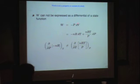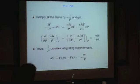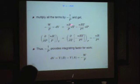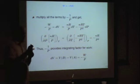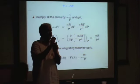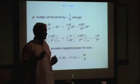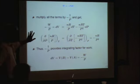When W is divided by minus P, you get a perfect differential which we call dV. You multiply all the terms by the integrating factor minus 1 over P, and you will find that the derivatives are the same. That means minus 1 over P provides the integrating factor for work, and dV equals dV minus dA. So dV is path independent, whereas work is a path-dependent entity. If you divide by pressure, it becomes path independent.